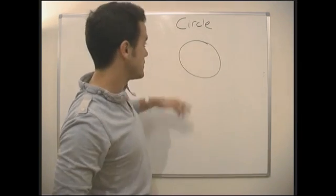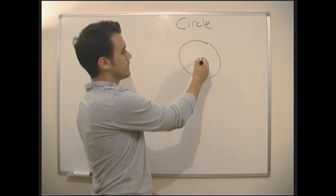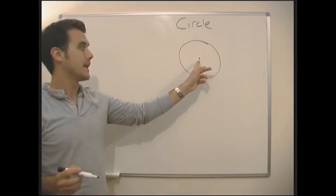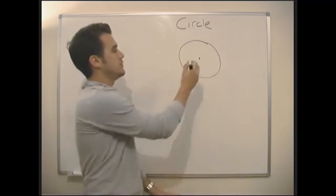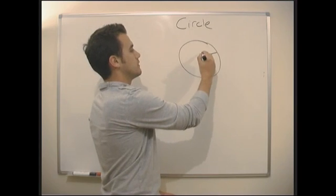OK, so, there's our circle. Right, a few things. We call the length from the centre of the circle to the edge, the radius.